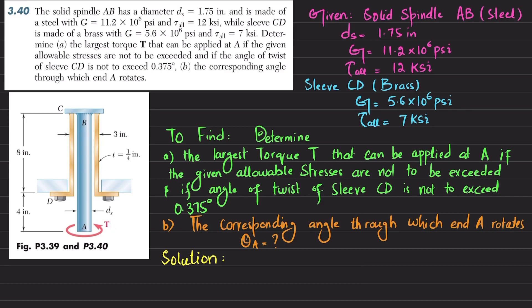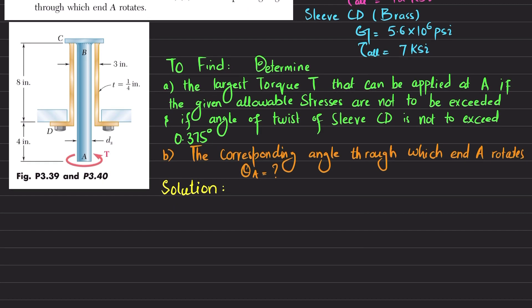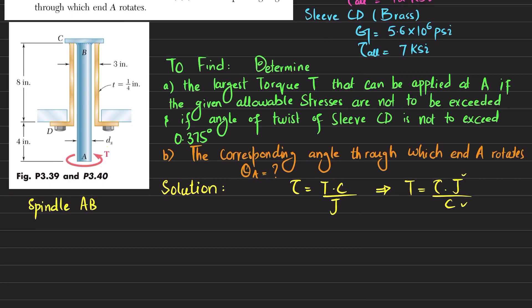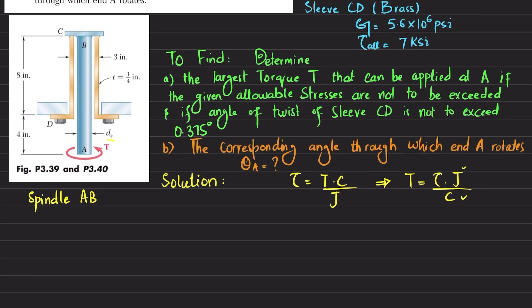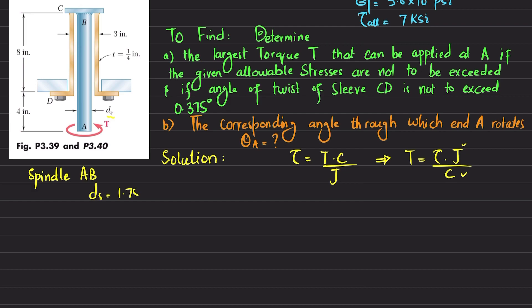Let's start with the solution. We know that shearing stress τ = T·c / J, so since in part A we want to find torque, torque T = τ·J / c. We will find J and c for spindle AB and the sleeve. For spindle AB, which is made of steel, the diameter is given as 1.75 inches, so d_s = 1.75 in.